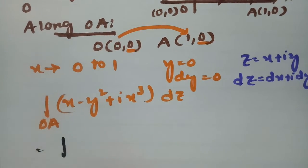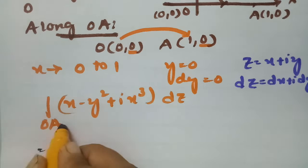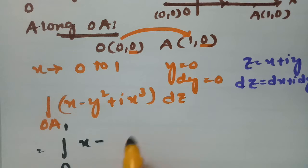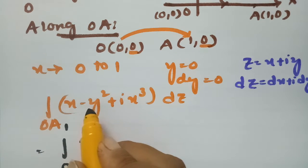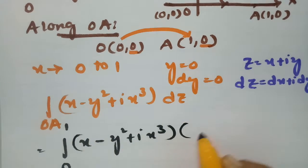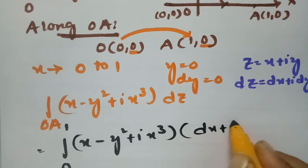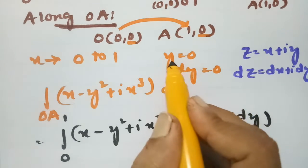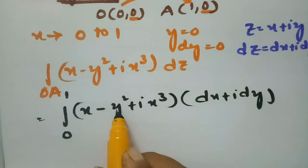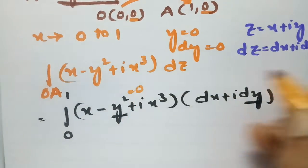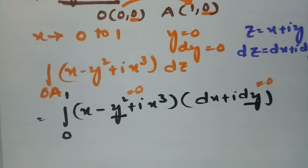Along OA, the limits of x are from 0 to 1. The integrand is (x - y²) + i·x³, and dz = dx + i·dy. Since y = 0 and dy = 0, both y² and i·dy terms become zero. Substituting these values, only the terms with x remain.